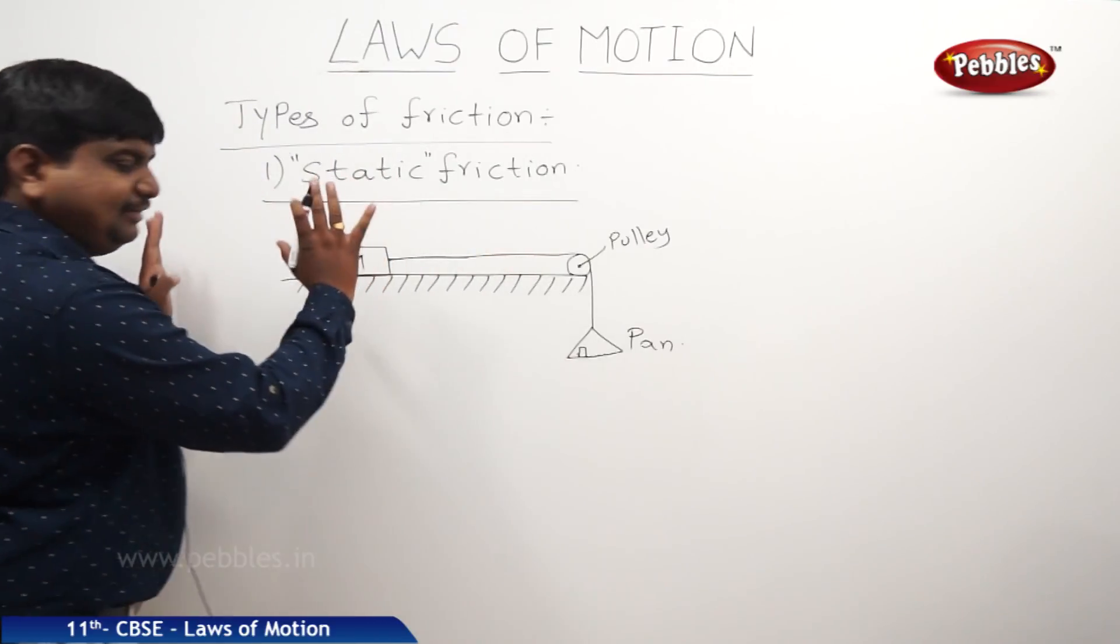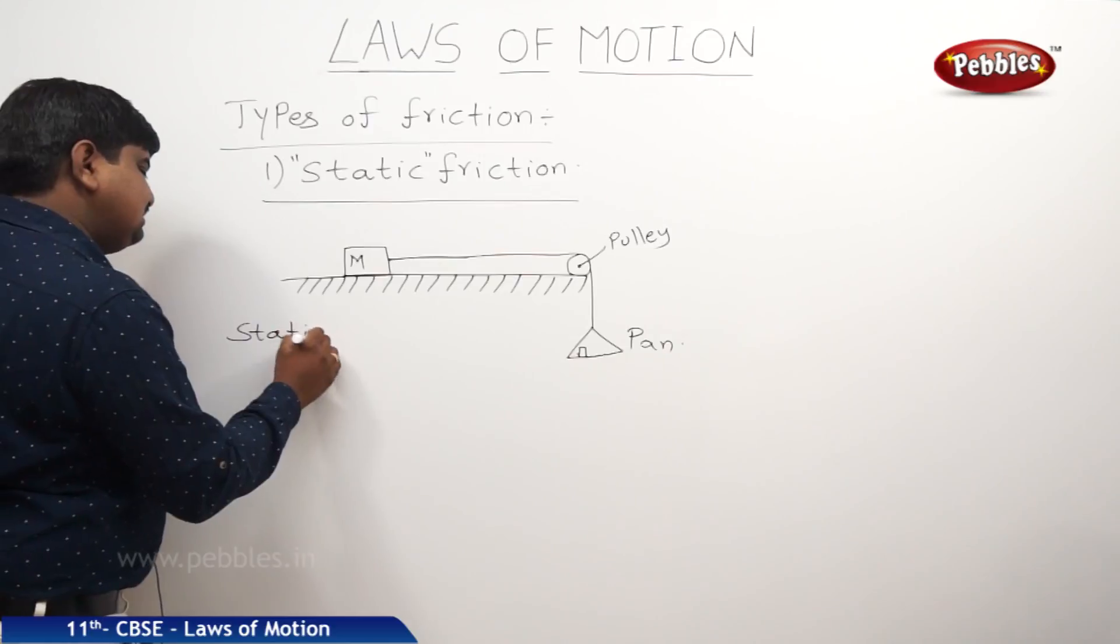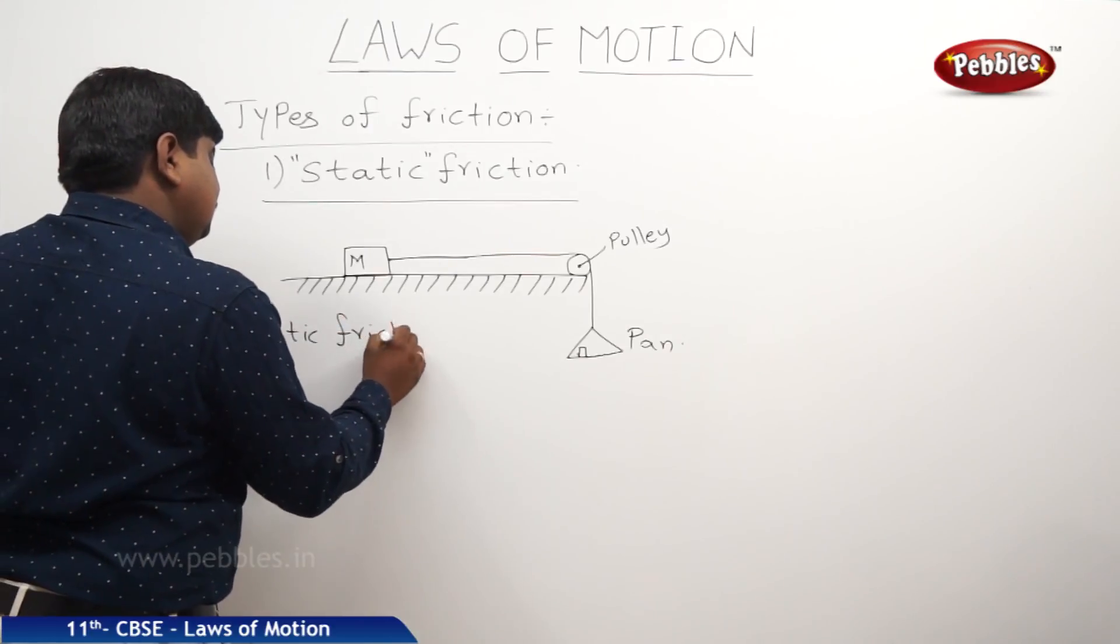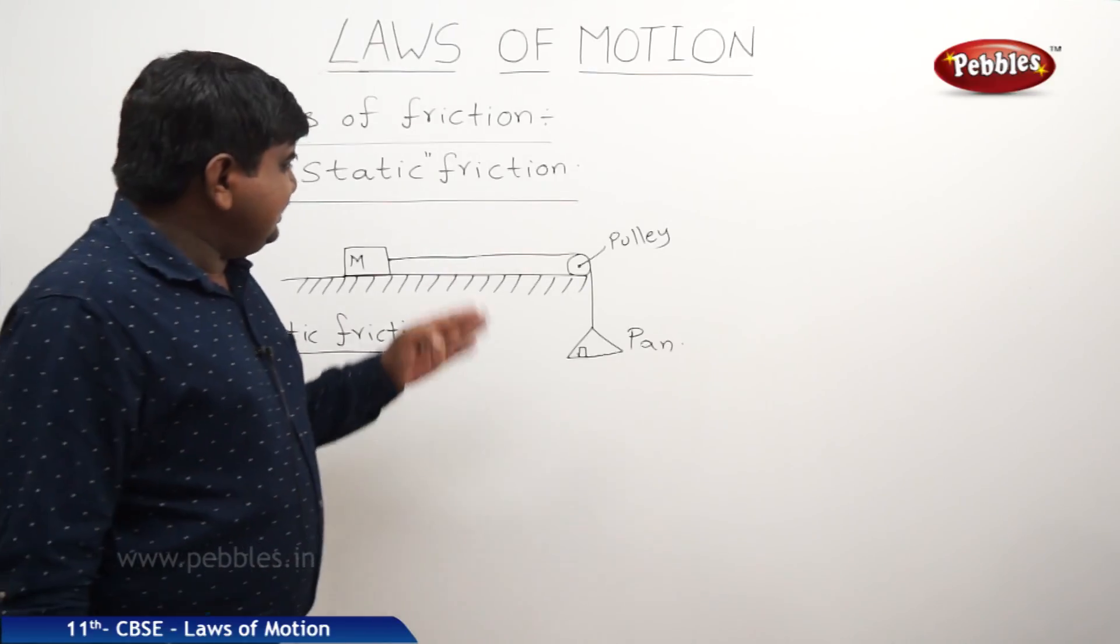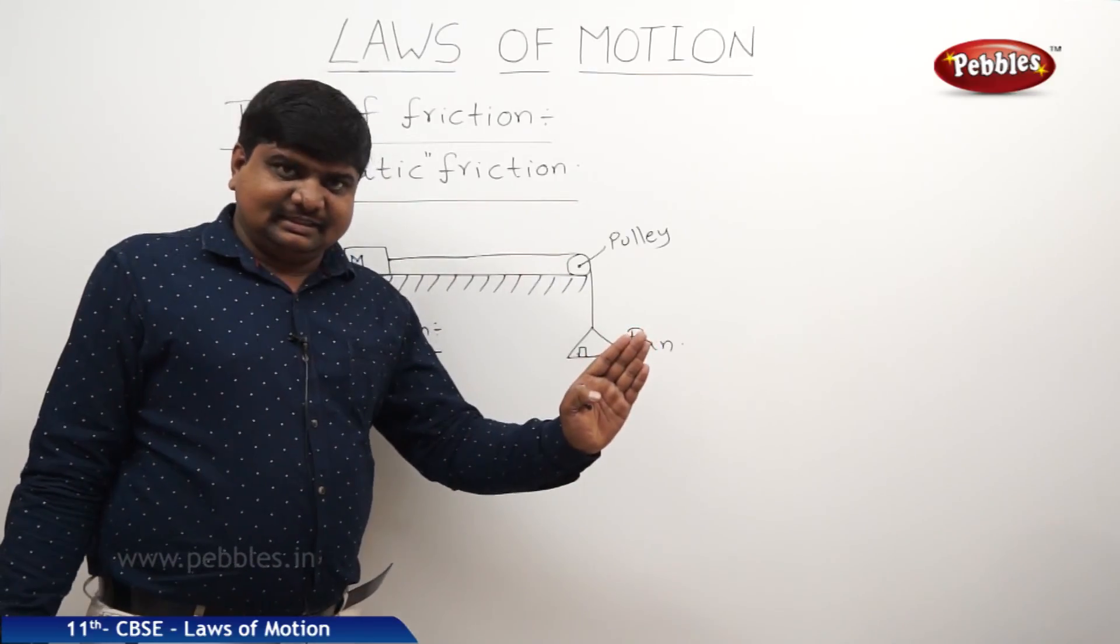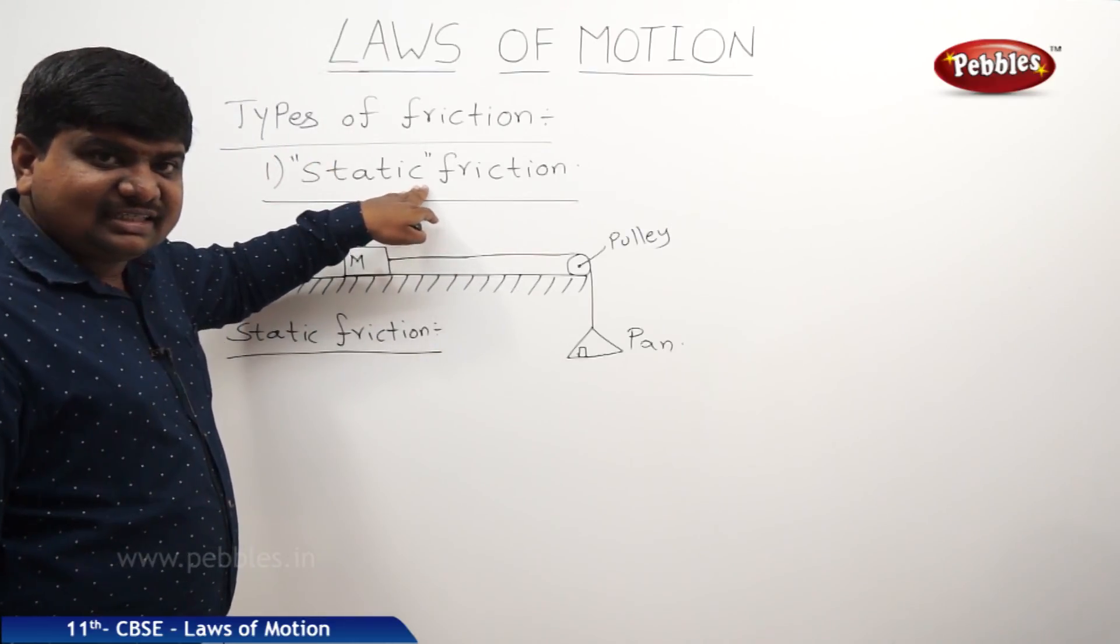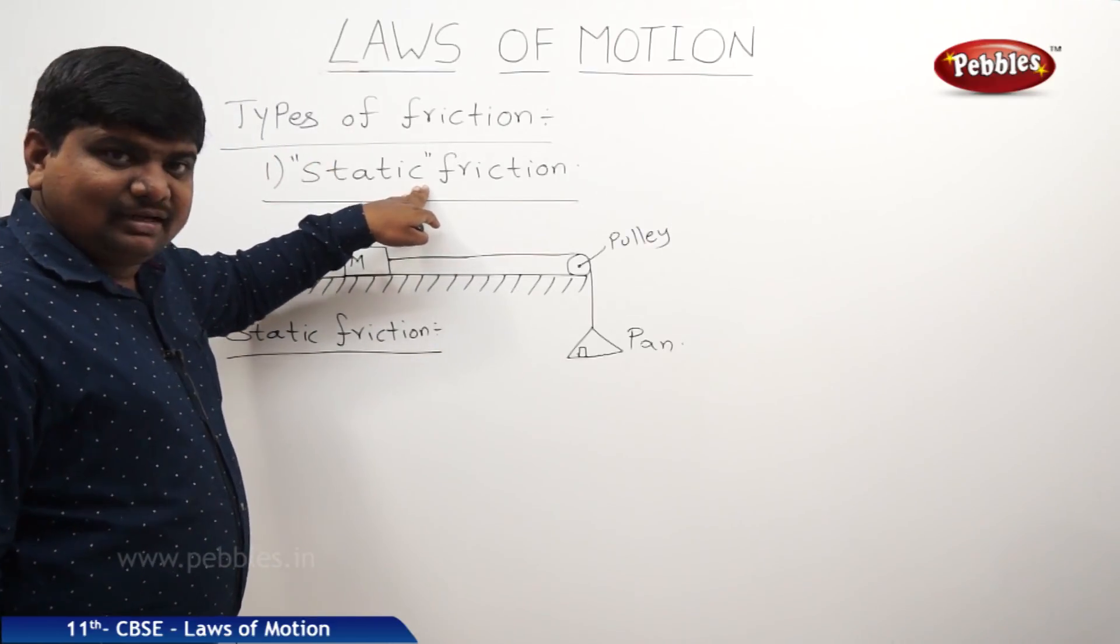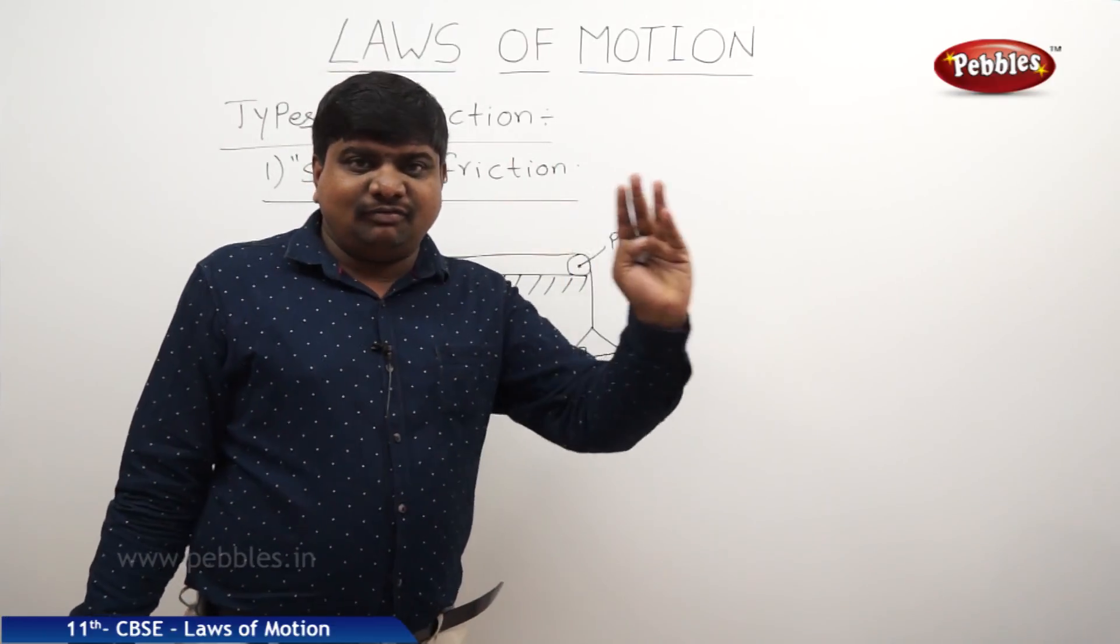So what is the definition of static friction? The static friction may be defined like this: It is a force of resistance offered by a body which is in static state or steady state while it is tending to move under the action of external force.